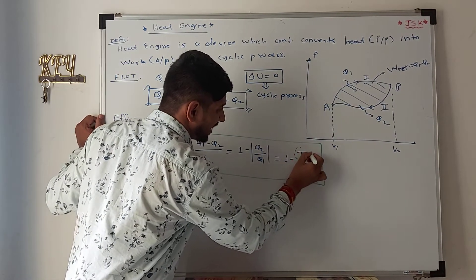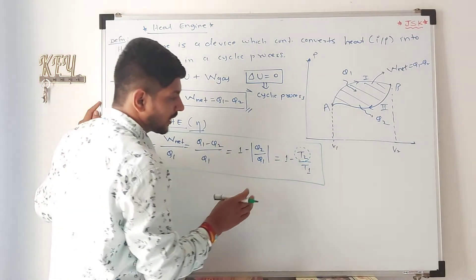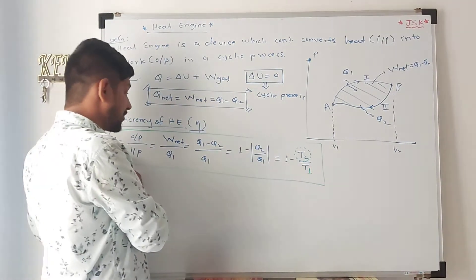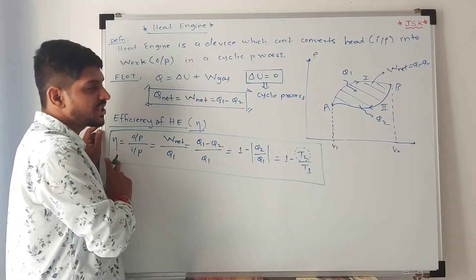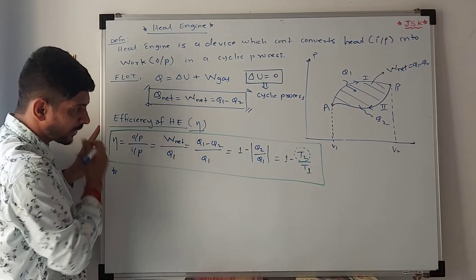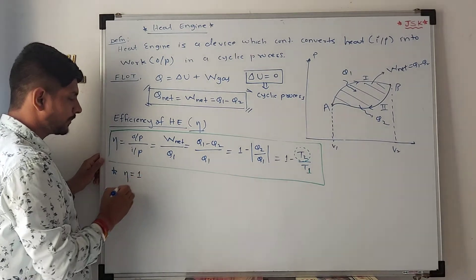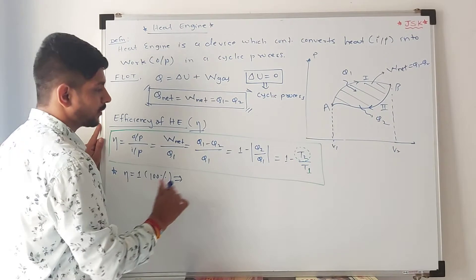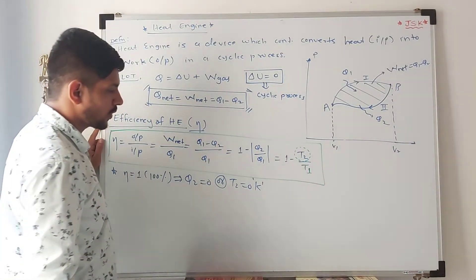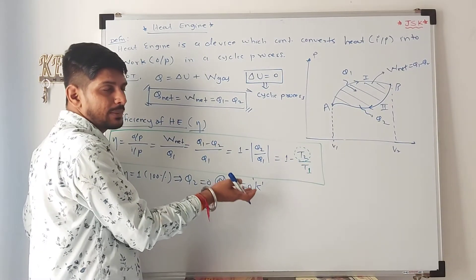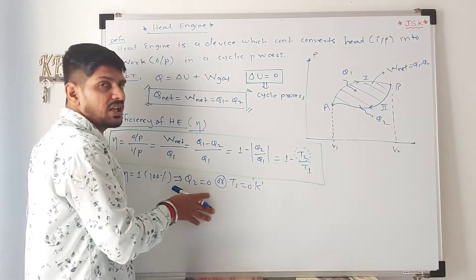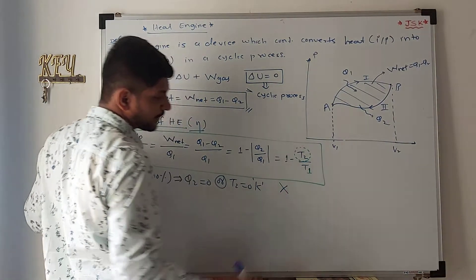We know that T2, in most cases, is the environment temperature — the surrounding temperature. So by maintaining proper source temperature T1, we can change or increase the efficiency of the heat engine. Now, efficiency equal to 1 means 100% efficiency. But this is possible only if Q2 is equal to zero, or T2 is equal to 0 Kelvin — which is not possible at all. We cannot maintain T2 as 0 Kelvin (absolute zero). Hence, efficiency of 100% is not possible at all.